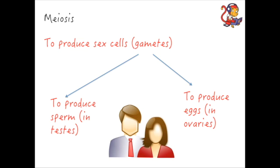Hello and welcome to this video about meiosis. It's the second form of cell division that we're going to look at. We looked in a previous video at mitosis — mitosis happens in relation to cell division for growth and replacement of cells in our bodies. Meiosis, however, is different. It's very specifically to produce the sex cells, which are sperm and eggs in humans. So it's a very specific form of cell division and it's slightly more complicated than mitosis.